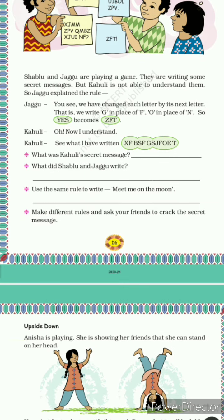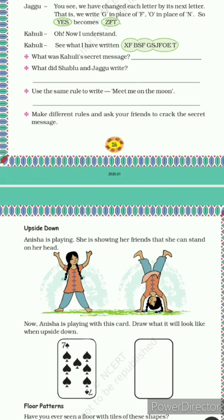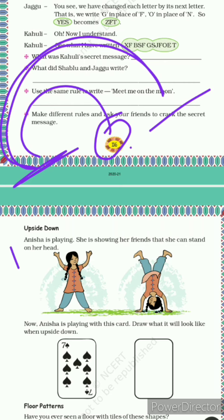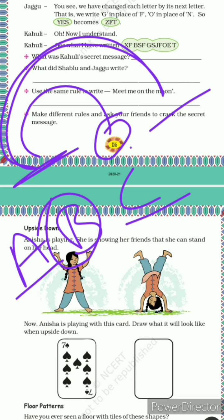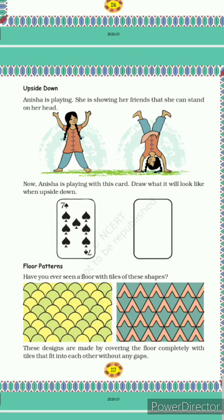Next is: make different rules and ask your friend to crack the secret message. Aapko aisa kuch different rules banane hain khud se, aapne messages ko aapne friends ko dena hai aur unko solve karne ke liye kehna hai. Suppose A B C — to aap A ke liye C use kar sakte hain, skipping one letter. Aap apne aap se hi aisi bahut saare rules bana sakti hain.